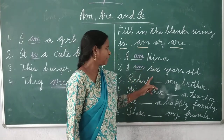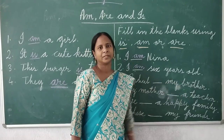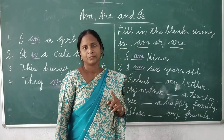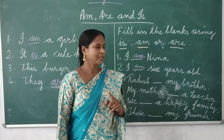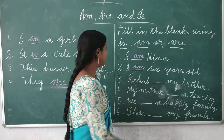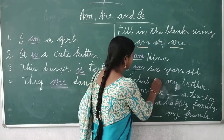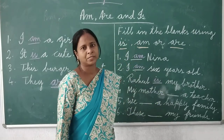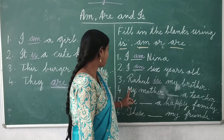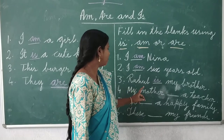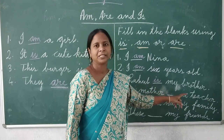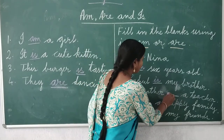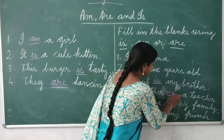Next one: Raghun is my brother. Raghun is only one person, talking about one person, so we use 'is' here. Next: my mother is a teacher — talking about one person, so we use 'is'.